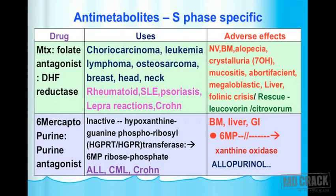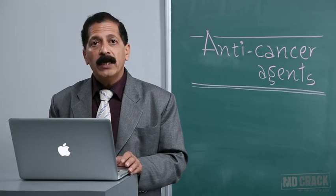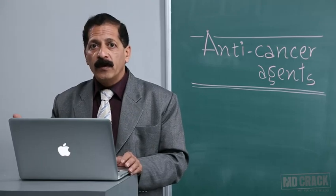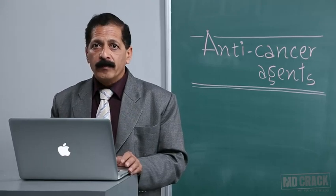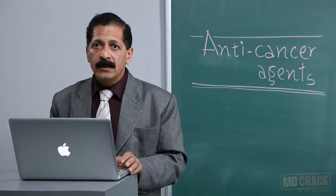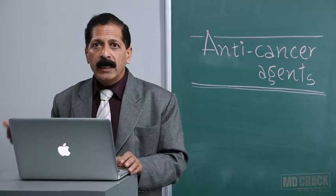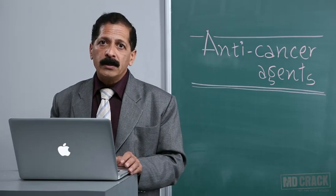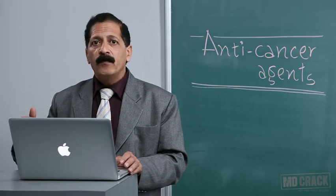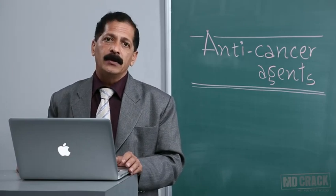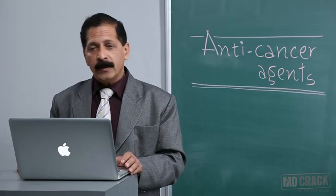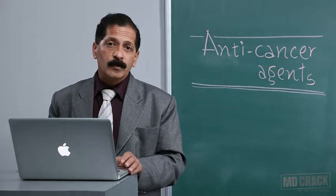The drug interaction between 6-MP and allopurinol is an important interaction to always remember. These are the anti-metabolites acting on the S phase: methotrexate and 6-MP. You can go to the further session to learn about other anti-metabolite drugs and further anti-cancer drugs.